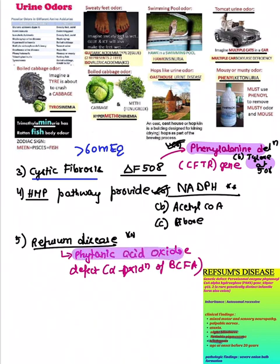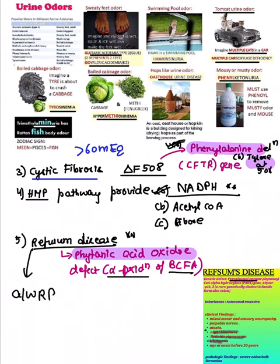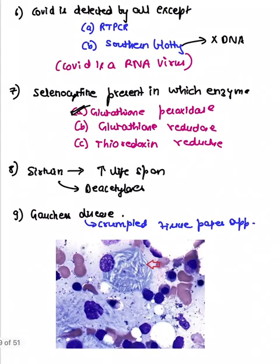Refsum disease was also asked. It is due to deficiency of the enzyme phytanic acid oxidase, causing a defect in alpha-oxidation of branched-chain fatty acids. This takes place in the peroxisome. It is associated with retinitis pigmentosa, night blindness, and ichthyosis.